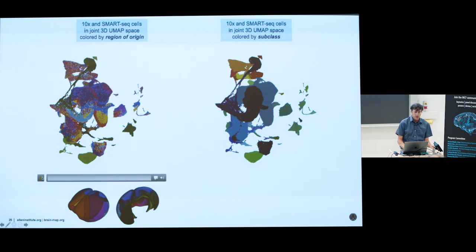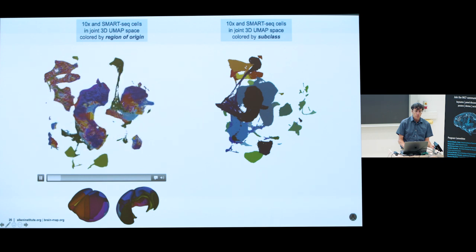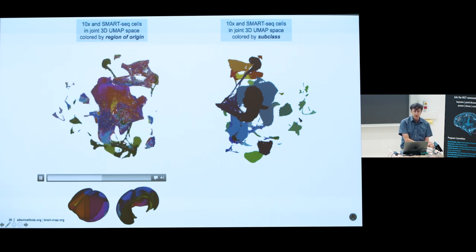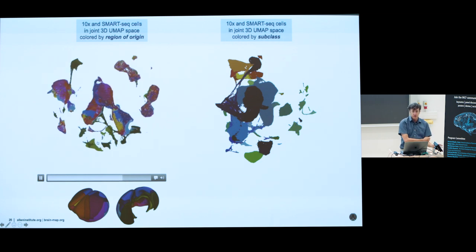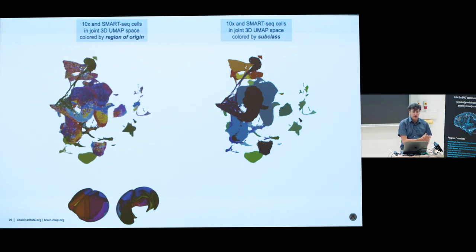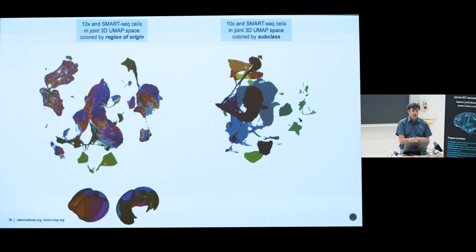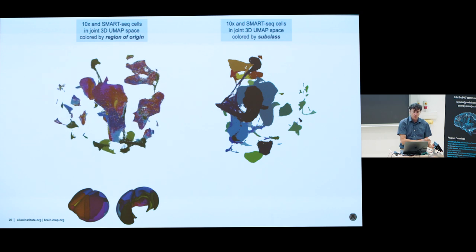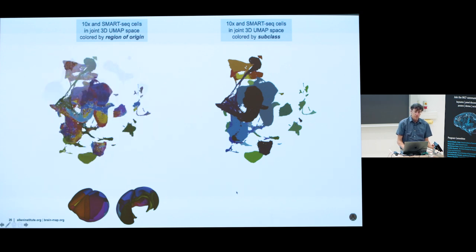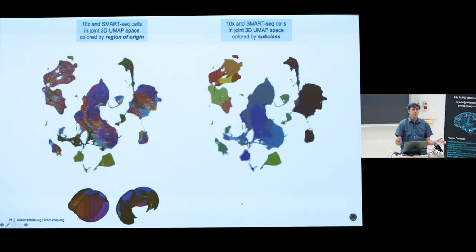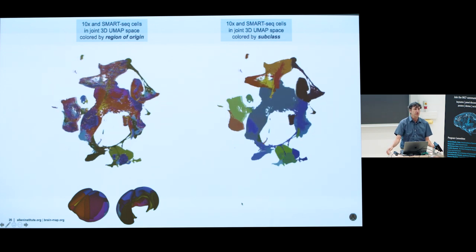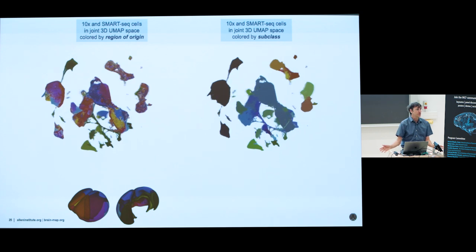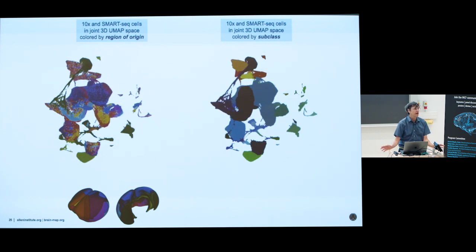We tend to use TSNE or more recent UMAP embeddings to describe this data. I think it's funny, because there's always a tendency to look at these and see there's evidently structure, but one doesn't really know quite how to interpret it. People will praise the fact that they've gone to three dimensions from two, thinking now they see so much more. But in reality, this is just a three-dimensional reduction of a very high-dimensional space.